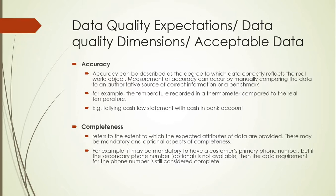Now we've seen why data becomes poor quality and what problems organizations face with it. The next question is: how can we say data is good quality or not? There are certain standard dimensions or expectations set for data to be called good quality. If data passes through all these dimensions, it's called good quality data. The first dimension is accuracy — it reflects how closely data mirrors the real-world object.